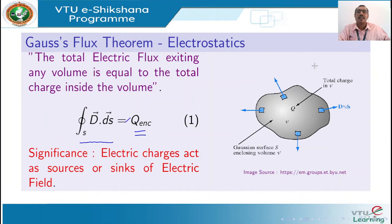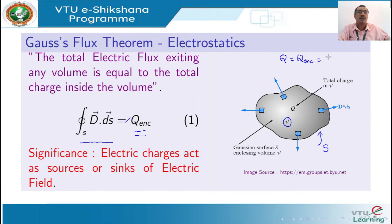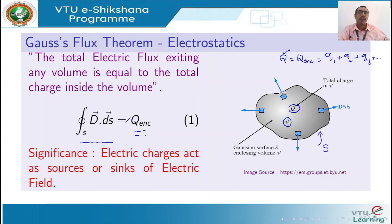Let us understand this theorem through a diagram. We have a closed surface S enclosing volume V and charge Q. The total charge Q is nothing but Q1 plus Q2 plus Q3 and so on. These charges are distributed inside the volume and may be positive or negative. The total charge enclosed by the closed surface is Q.